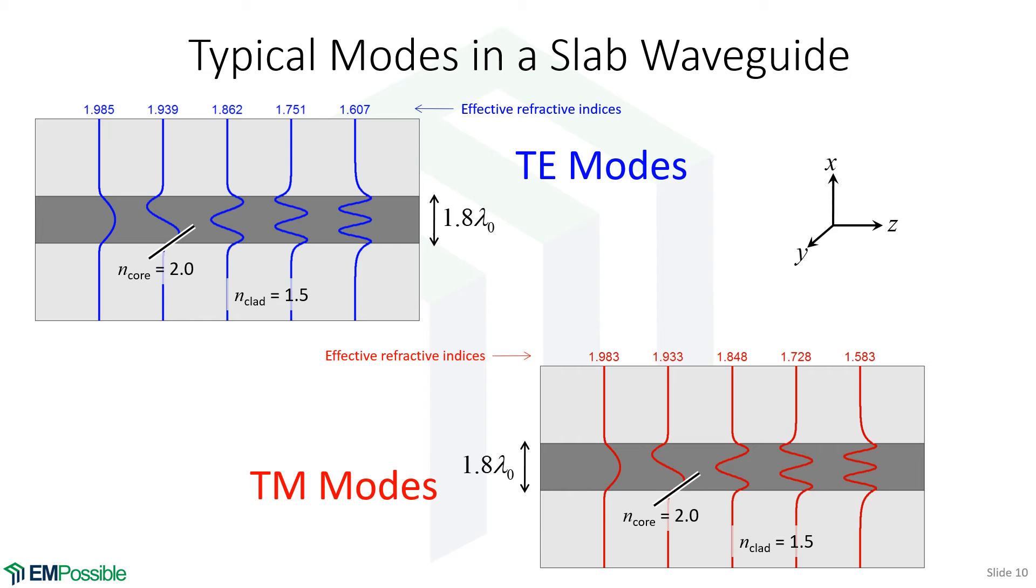Here is some typical modes that we would calculate. I've drawn the cross section of the slab waveguide. I've chosen the core in each of these cases to be 1.8 wavelengths wide. I chose a big number because I wanted it to support multiple modes so I could draw all those modes.